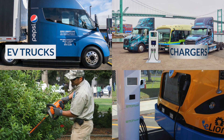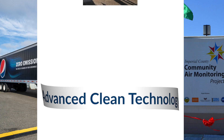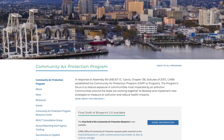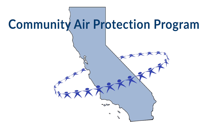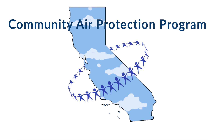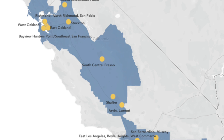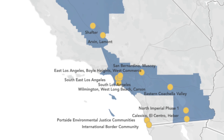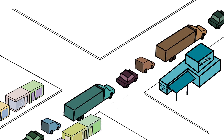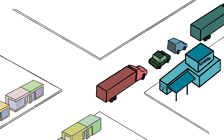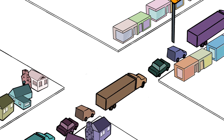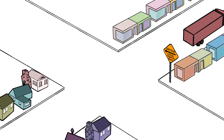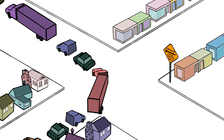Incentives can be used to help reduce public exposure to air pollutants already emitted or advance clean technology. CARB has many incentive programs. For example, CARB's Community Air Protection Program has funded emissions exposure reduction projects in overburdened communities where there are many sources of air pollution. Some common examples are air filtration projects in schools and homes that improve indoor air quality. Incentives can also be used for things like truck rerouting projects that help reduce emissions in a community.